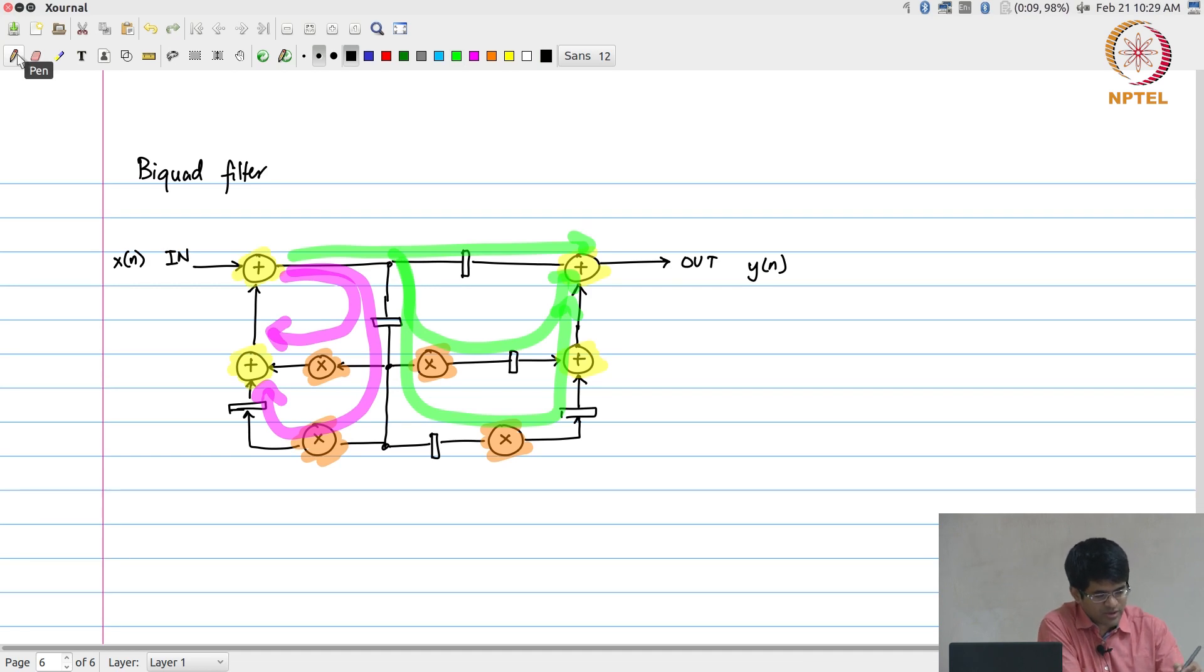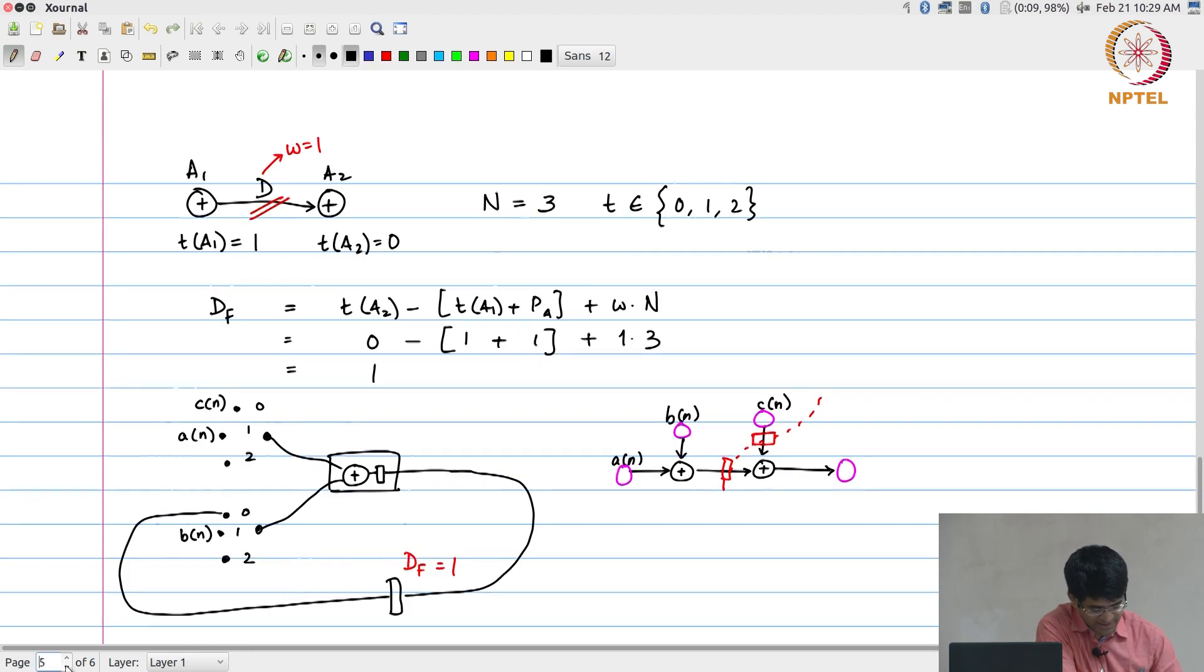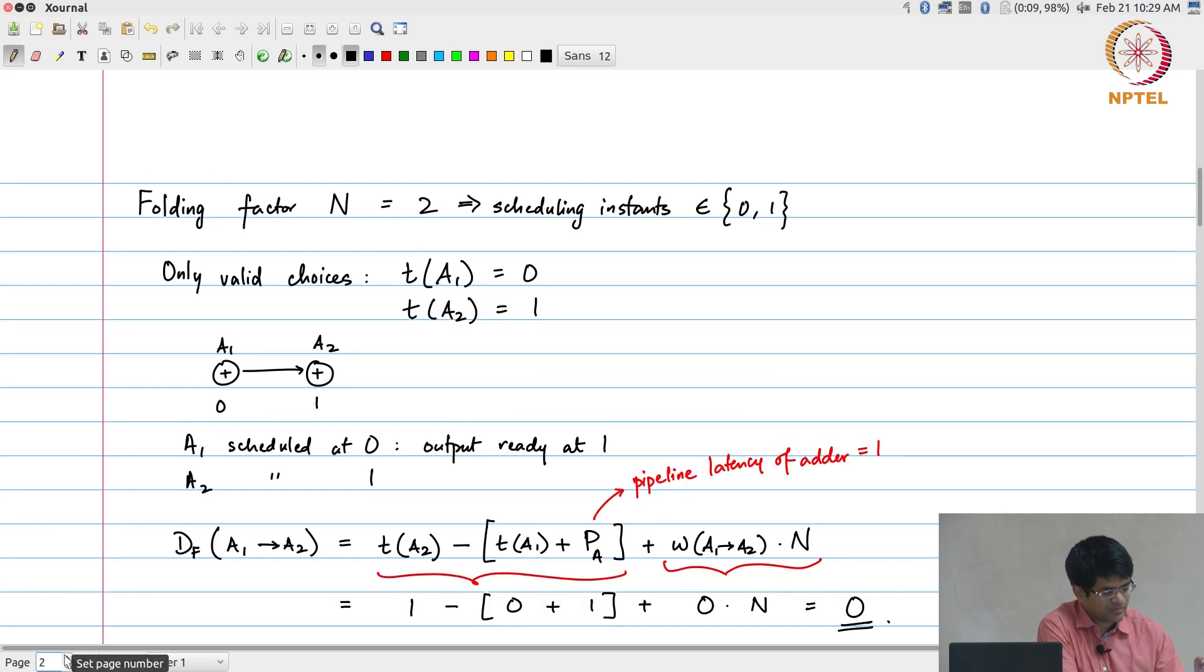So what I am going to do now is basically associate labels with each of these operations, but more importantly what I am going to do is define something called a folding set. In order to understand a folding set it might be easier if we just go back to our original examples. What I am going to say over here is if I do this, that is T of a1 equal to 0, T of a2 equal to 1, I can also equivalently write that by saying that there is a folding set which has the elements a1 and a2.